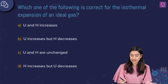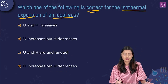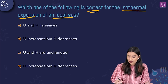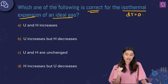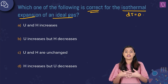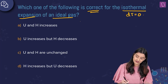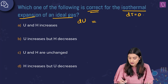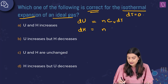Which of the following is correct for isothermal expansion of an ideal gas? Isothermal means constant temperature, so ΔT = 0. The options discuss U and H — internal energy and enthalpy. Since DU = nCᵥDT and DH = nCₚDT, and DT = 0, both DU and DH equal zero.